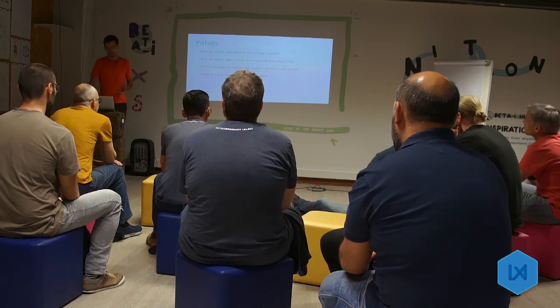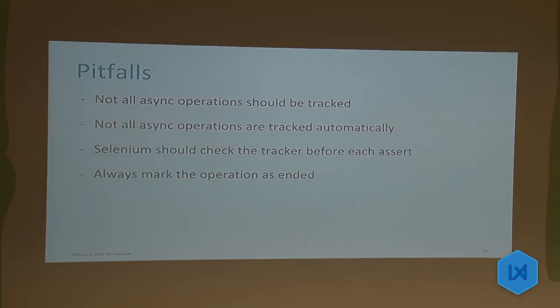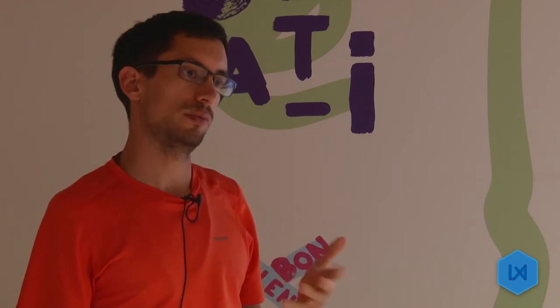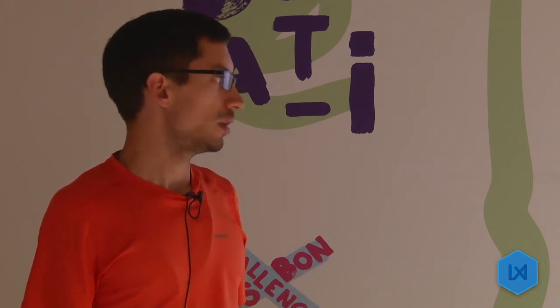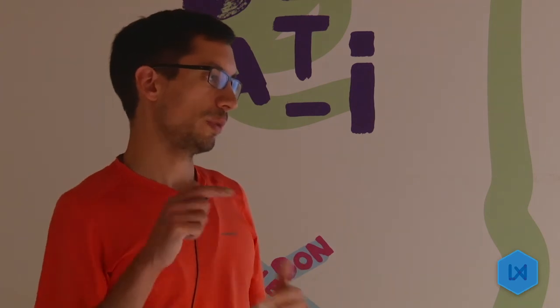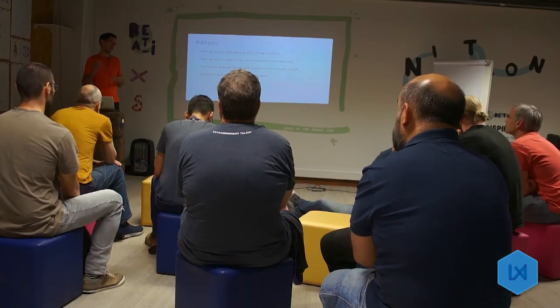Some pitfalls: not all asynchronous calls should be tracked. For example, a timeout to hide a toast notification — you may not want to track that, because it's not really an operation in progress, it's just an asynchronous call. Also, not all operations are tracked automatically because we have some custom code that makes requests in an unusual way and needs to be tracked manually. Selenium needs to check the tracker before each assertion, and you must be very careful not to forget any code paths — never forget to mark an operation as ended, because otherwise you may have a code path where the operation does not end and the Selenium test will get blocked.